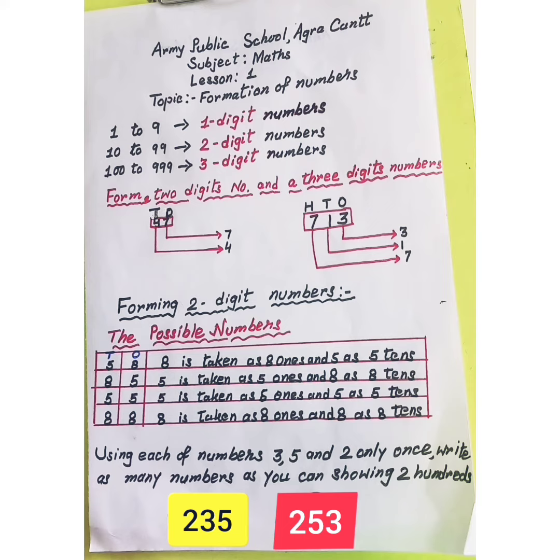What if we repeat the digits? Yes, by repeating the digits we can form two more numbers by placing the same digit in both the ones and tens places. So we get the numbers 88 and 55.